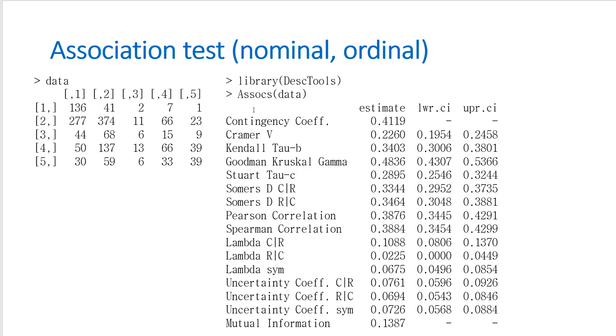And also you can think of many different statistics to understand association between them. For example, if you have five by five contingency table, you can get various statistics to understand nominal association or ordinal association. I will show you how to get this statistic in a separate video.